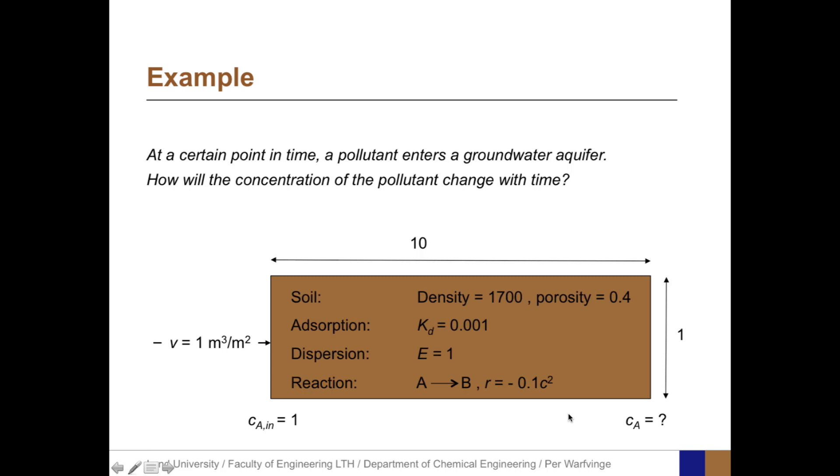When it comes to the various processes, the soil density will be set to 1,700 kilograms per cubic meter, the porosity to 0.4, kd will be 10 to the minus 3rd, the dispersion coefficient will be 1, and we'll have a second-order reaction with respect to A, and with the rate equation R equals 0.1 times the concentration of A squared.